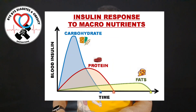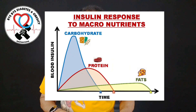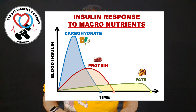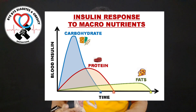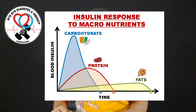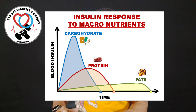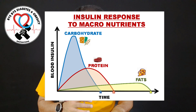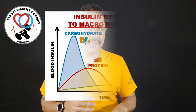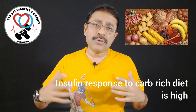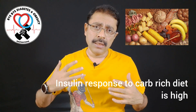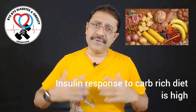Just see this graph to understand how insulin secretion happens and how the pancreas responds to the various macronutrients in our diet. The moment we have carbohydrates in our diet, the insulin response is very high. It is moderate for protein and absolutely low for fats. So when you take a diet which is very rich or very high in carbohydrates, the insulin response in your blood is very high.